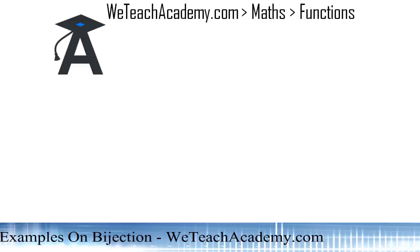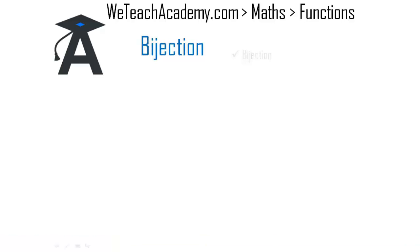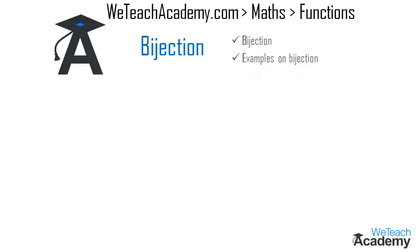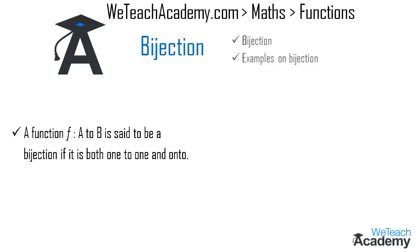Welcome to vtishacademy.com. In this presentation we are going to discuss bijection. First we will learn the definition of bijection and then solve a few examples. A function f from A to B is said to be a bijection if it is both one-to-one and onto. Let me explain this concept with the help of an example.